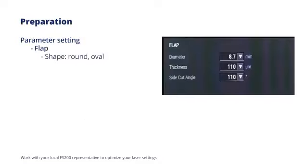The flap shape could be round or oval, according to astigmatism axis. The diameter is set at 8.7 mm for myopia and may be smaller, for example, 8.5 mm for smaller cornea size of 11 mm.